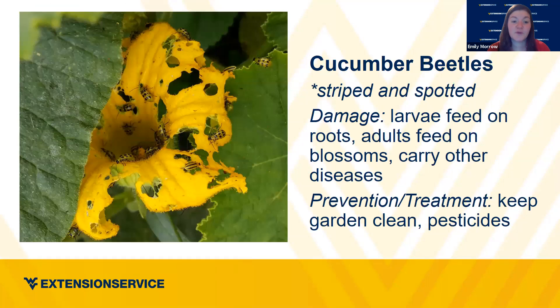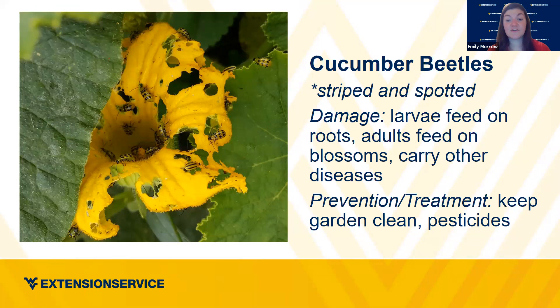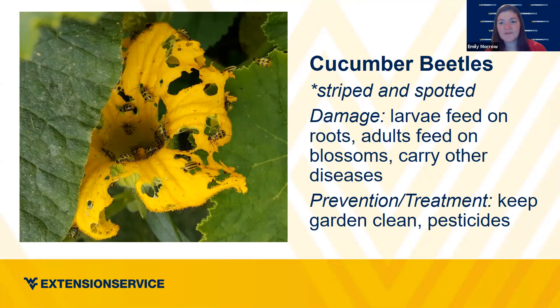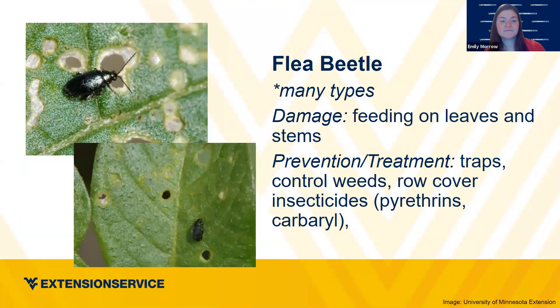Cucumber beetles — there are striped cucumber beetles and spotted cucumber beetles. The larvae feed on the roots, but the adults feed on the blossoms, and they also carry diseases like we talked about earlier. Keeping the garden clean, using pesticides, and routine monitoring helps disrupt their life cycle. With many really common pests, there are traps you can use to determine the population level. In certain crops we have threshold recommendations — when you catch this many in your trap within a certain time period, that's when you might want to use insecticides as a control measure.